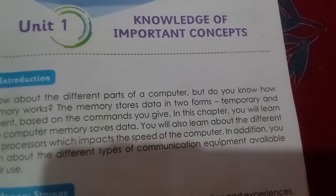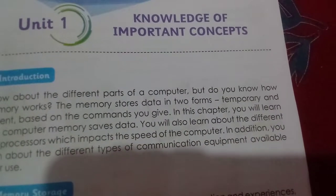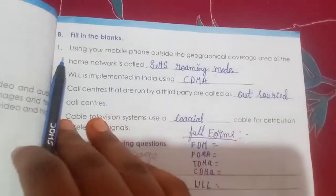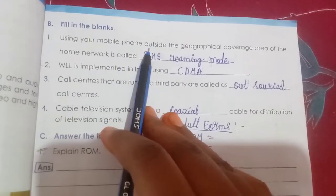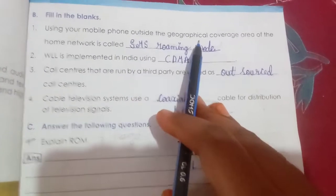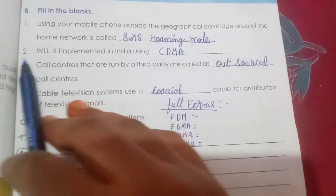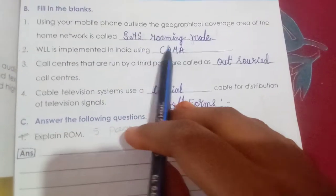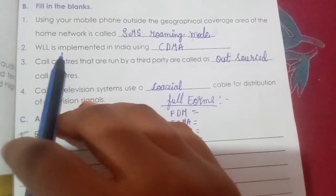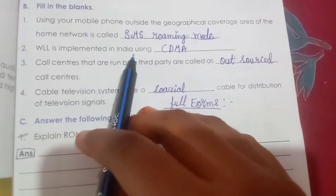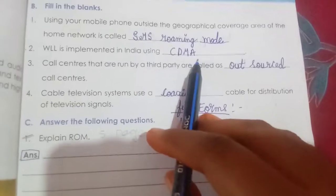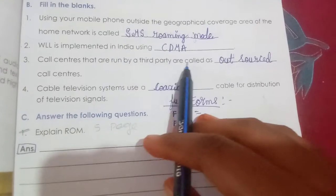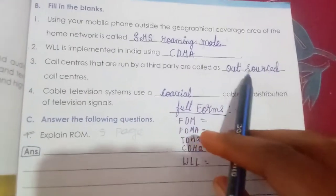Knowledge of important concepts. Fill in the blanks: Using your mobile phone outside the geographical conference area of the home network is called roaming mode. WLL is implemented in India using CDMA. Call centers that are run by a third party are called outsourced.